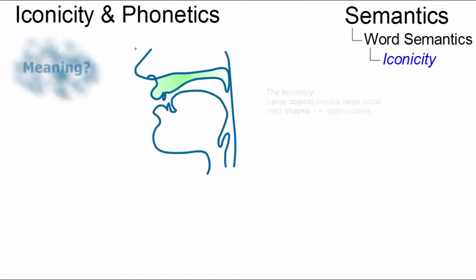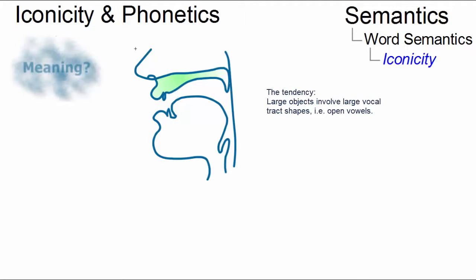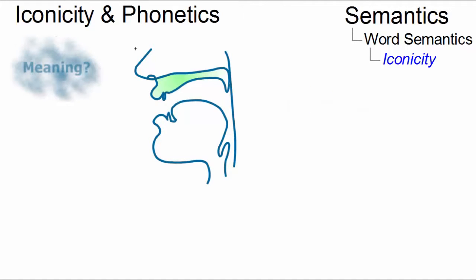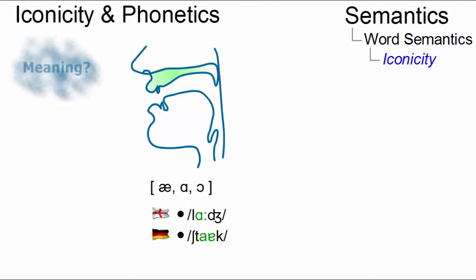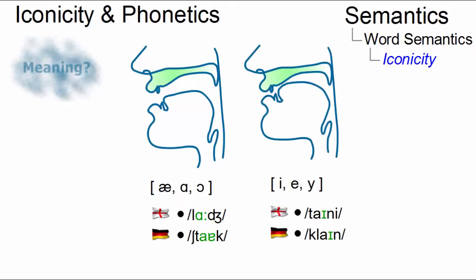In phonetics, for example, vowel magnitude relationships suggest that the larger the object, the more likely it is to involve open vowels — for example, in words like 'large' or German 'stark' — whereas smaller objects are more likely to involve a closed vowel, such as the 'e' in 'tiny' or German 'klein'.